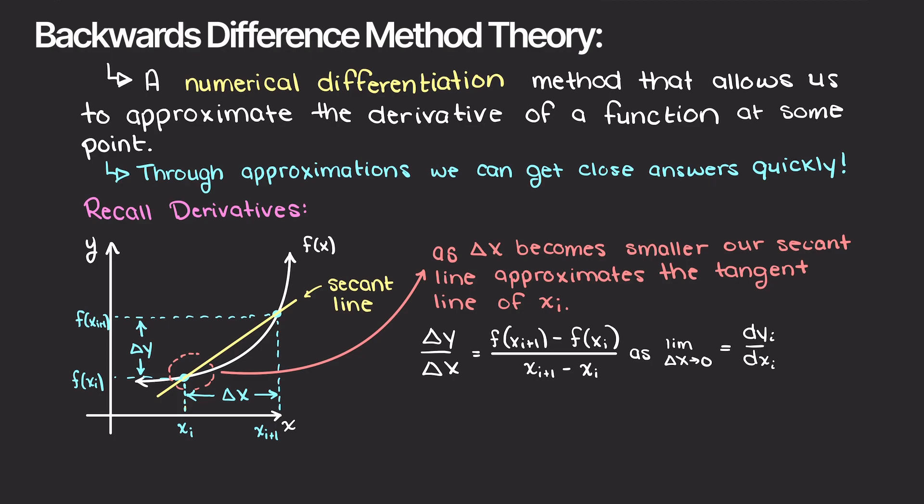How does that help us understand numerical differentiation? If we are okay with good approximations of what this derivative is, and not exactly as we would in say an analytical sense, we can say that the derivative at point x is roughly the change in our function across a very small change in x.